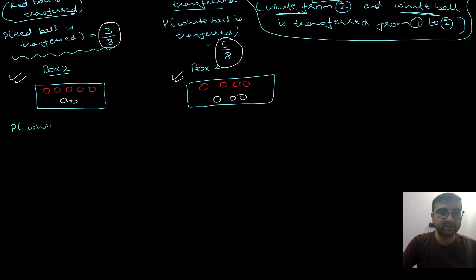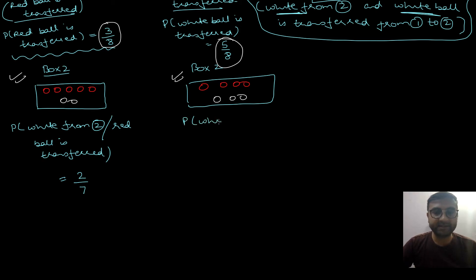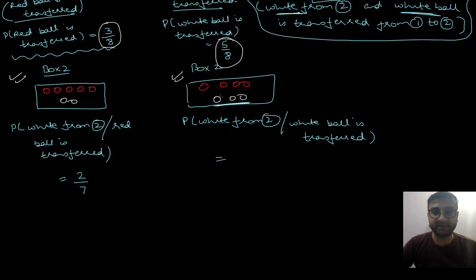Ab figure out karte hain: probability kya hai ki hum box number 2 se white ball ko select karein. P(white from box 2 | red ball is transferred): ab box number 2 mein in total 7 balls hain, jismein se 5 hain red and 2 hain white, toh ye probability ho jayegi 2/7. Similarly, P(white from box 2 | white ball is transferred): once again in total 7 balls hain, lekin in 7 mein se 3 balls white hain, so ye ho jayega 3/7.